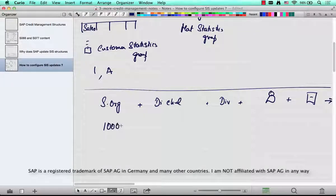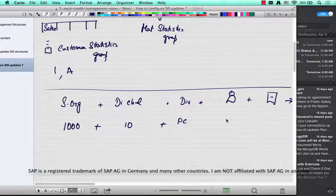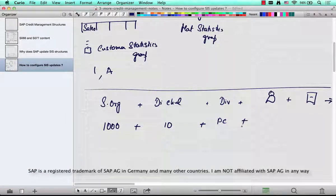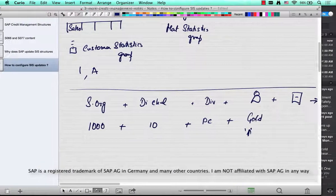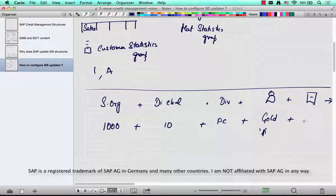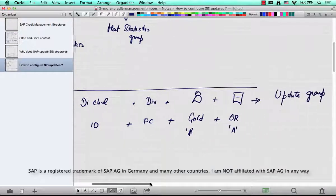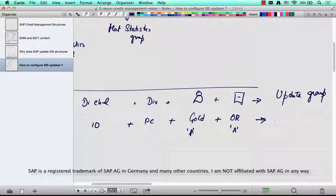So for USA 1000, retail distribution channel, division is say computers, PC, for say gold customers which are identified with a particular statistics group and of course for a document let's say all customer facing documents say OR has a statistics group of A. For that combination a particular update group say 012 or 0019 could be determined.